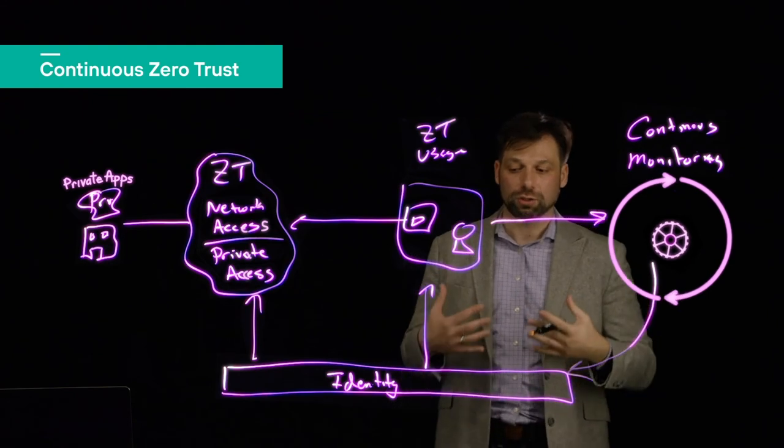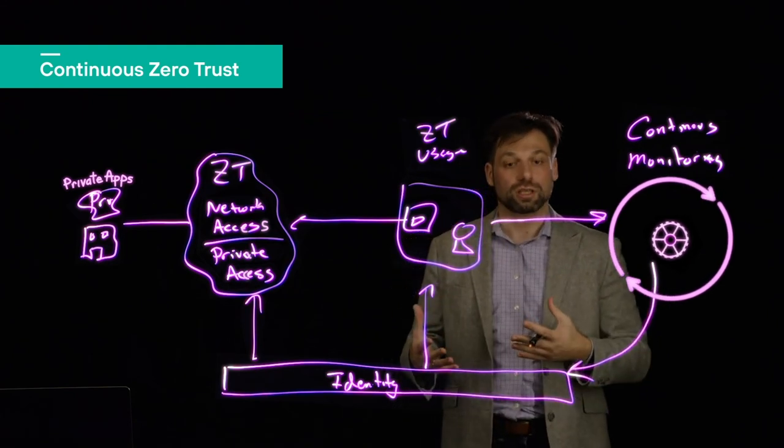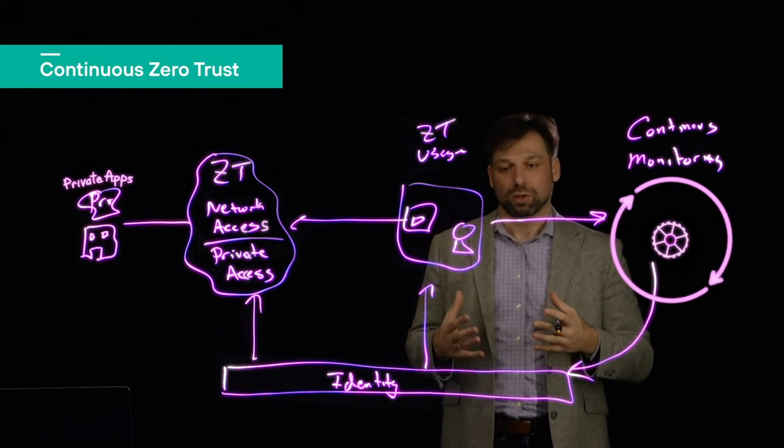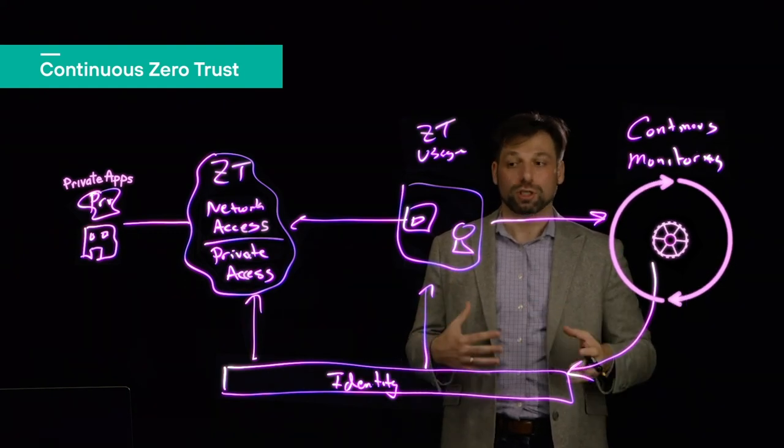That way we can validate based on the usage we're seeing, John or Bob or Alice just isn't themselves. We don't know who they are. We don't know if it's someone pretending to be John or Bob.